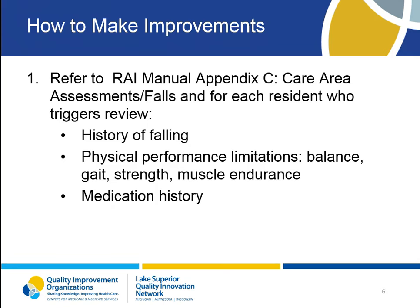To help identify what your team can do to improve this quality measure, refer to the RAI Manual Appendix C to find the care area assessment for falls. The care area assessment process provides a framework for guiding the reviews of triggered areas and clarification of a resident's functional status and related causes of impairments. It also provides a basis for additional assessment of potential issues, including related risk factors. The assessment of causes and contributing factors gives the interdisciplinary team additional information to help them develop a comprehensive plan of care.